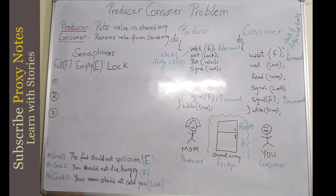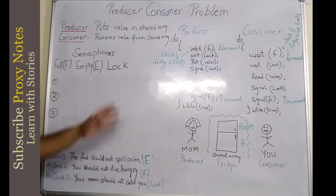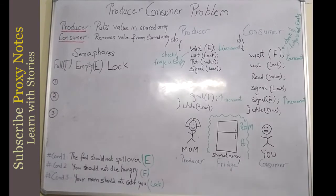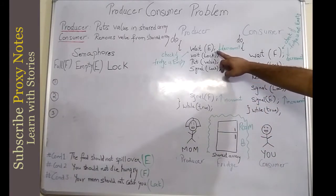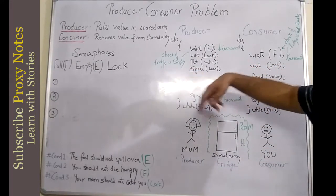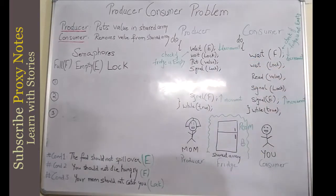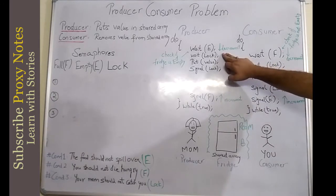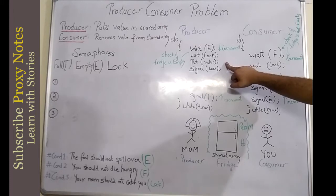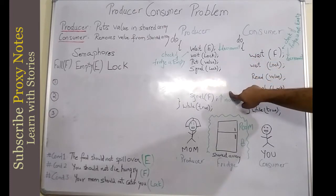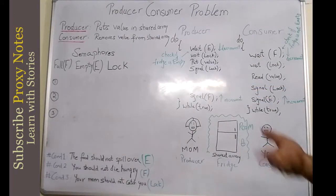Now let's look at the algorithm step by step. For the producer — your mom — she brings food from the kitchen and wants to store it in the fridge. First she checks the empty variable to see if space is available. If it is, she decrements e because the food will consume that space. She then locks the room, goes inside, puts the food in the fridge, comes out, unlocks the room, and increments the full counter f.